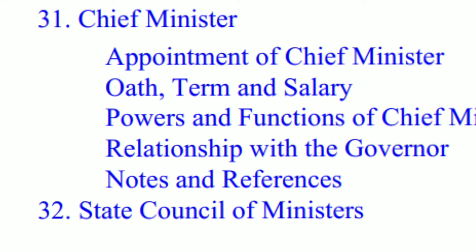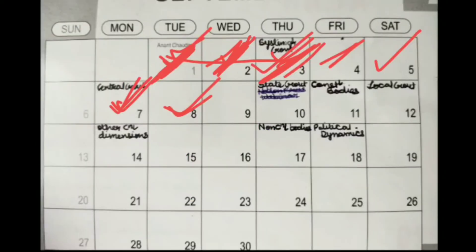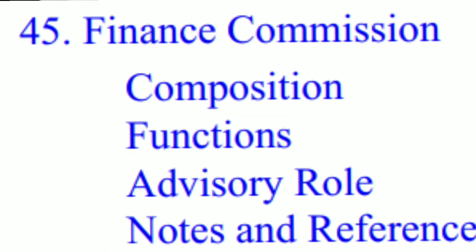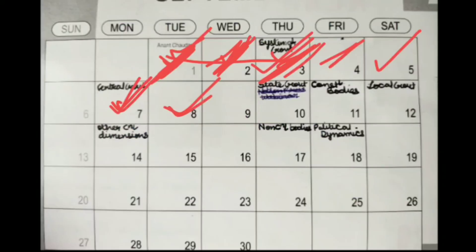On day nine, you complete the Chief Minister chapter and State Council of Ministers — it's the same as Prime Minister and Central Council of Ministers, so just compare accordingly. Along with that, you read about the Election Commission and Finance Commission, because both are small but quick. Link subjects by how much time they take and compile them together.